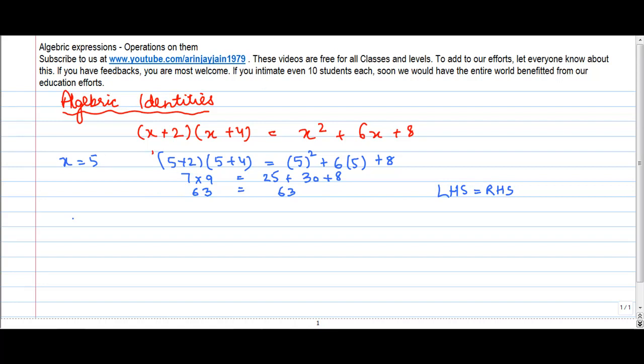Let us take a value of x as 3 here and put it in this equation. What do I get here? (3 + 2)(3 + 4) = 5 × 7 = 3² + 6(3) + 8, which is nothing but 9 + 18 + 8. Now, in this equation basically, unlike an equation which is true for some values,